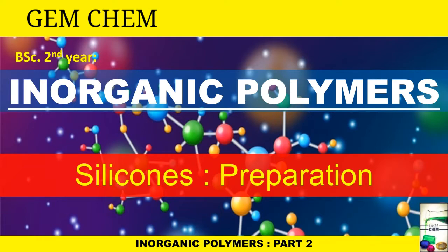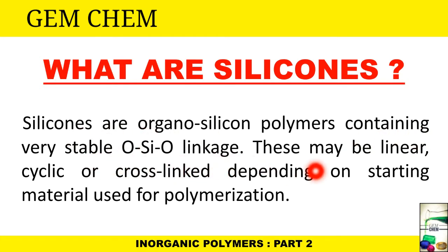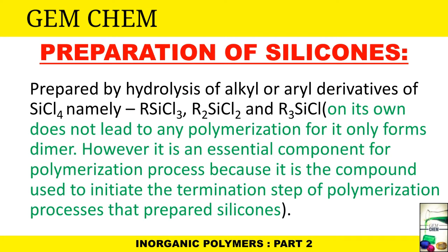Now, what do we mean by silicones? Silicones are organosilicon polymers containing a very stable oxygen-silicon-oxygen linkage, and these may be linear, cyclic, or cross-linked depending on the starting material used for polymerization. We are going to deal with the preparation of all three types of silicones.